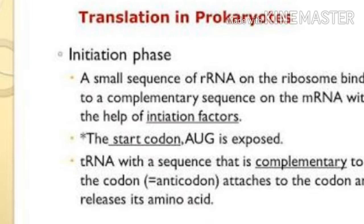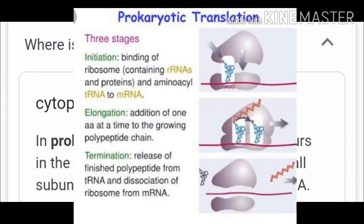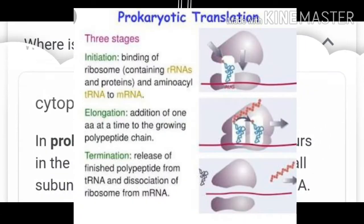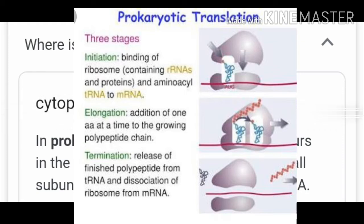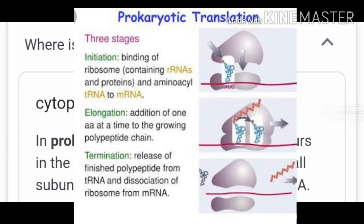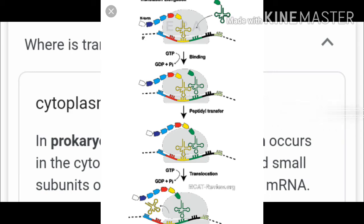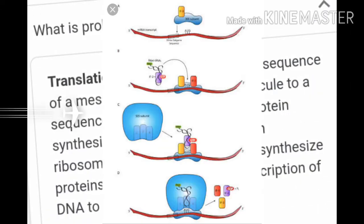Step number one: activation of amino acid. It is the first step, during which amino acids are activated in the presence of ATP and linked with tRNA in the presence of an enzyme complex called aminoacyl-tRNA synthetase. In prokaryotes, the first amino acid combines with ATP.